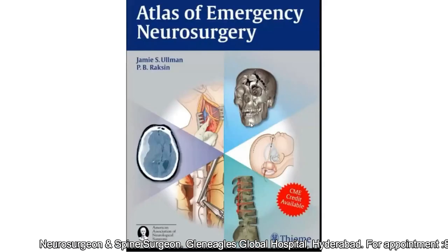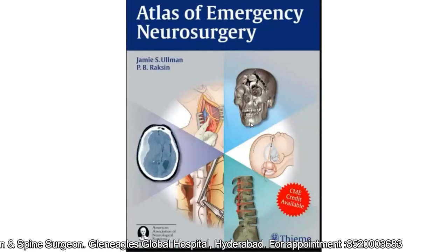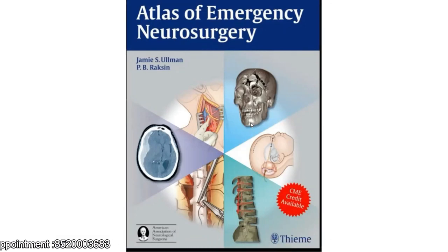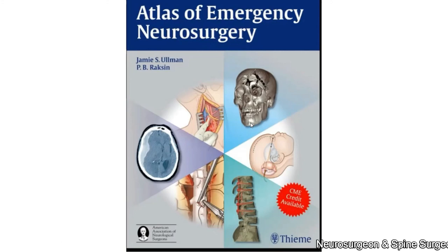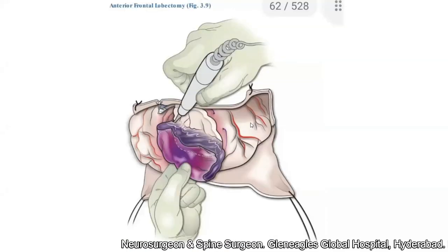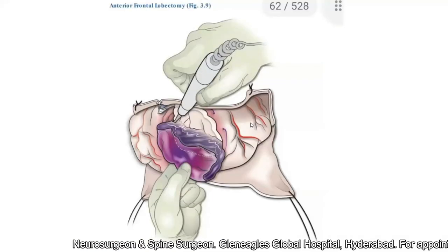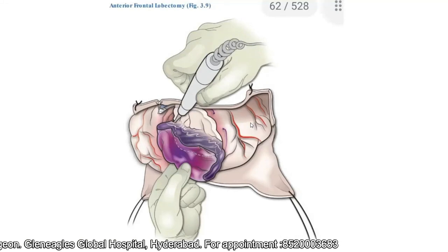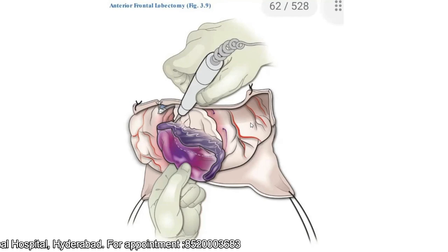If you have any other doubts, all my chapters and explanations are from the book 'Atlas of Emergency Neurosurgery' by Dr. Jamie Ullman and Dr. Raksin. You can refer back to the book. This concludes my session. In our next session, we will cover one more emergency operative neurosurgery technique.